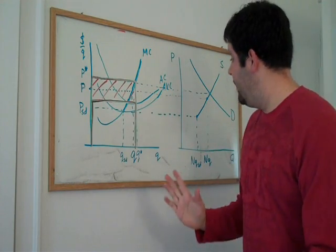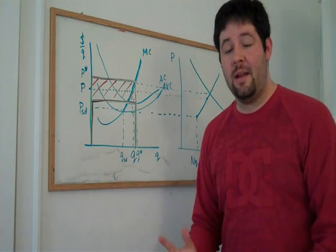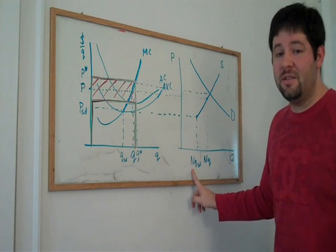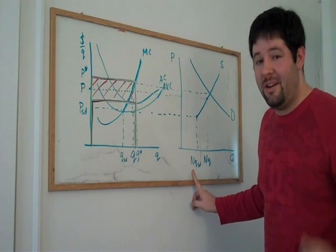So in the short run, this graph where we're multiplying by N is the right idea. We should just multiply by the number of firms that are in the industry.